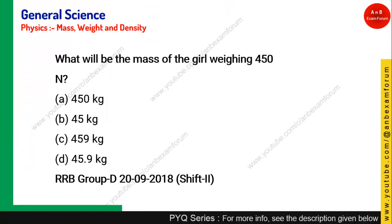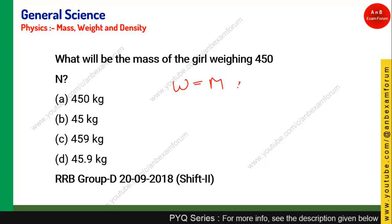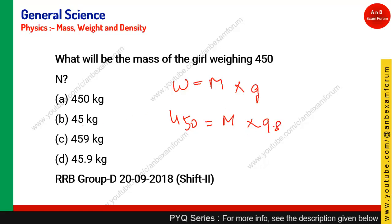Next question: what will be the mass of a girl weighing 450 Newton? Using W = mg: weight = 450 N, g is not given so always use 9.8. If you use 10, you will be trapped — the answer would incorrectly come to 45. Do not use 10 when g is not specified.